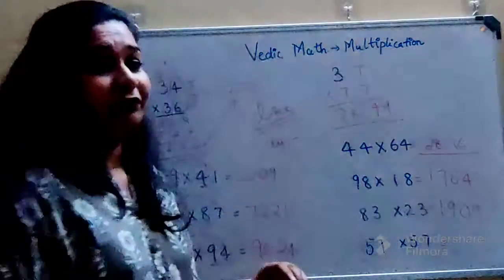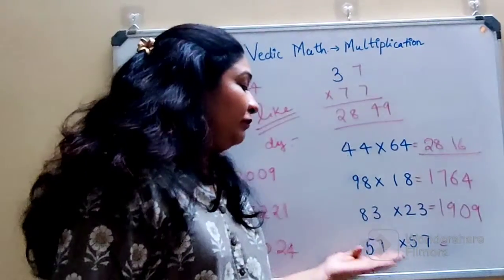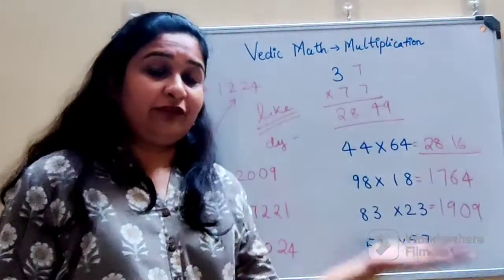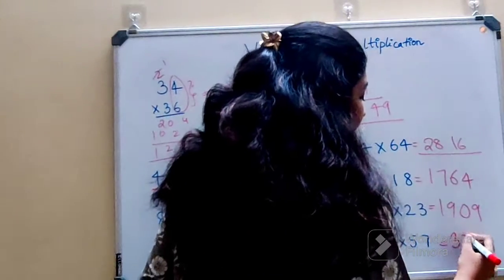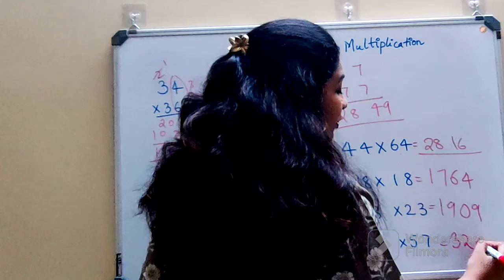So 57 into 57. So it is what? 5 into 5 is 25, plus 7 will get you 32. And then 7 into 7 is 49.